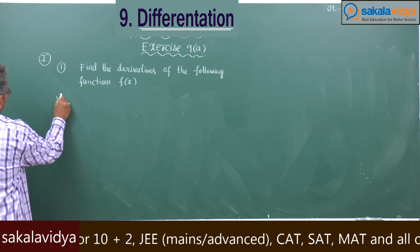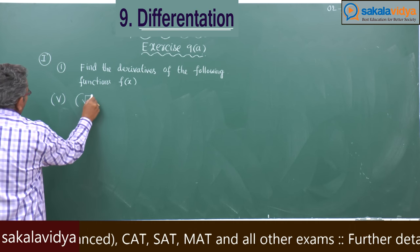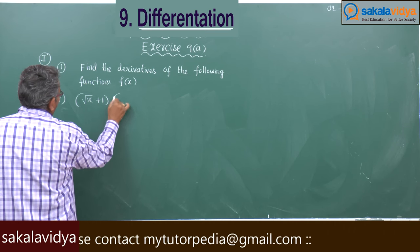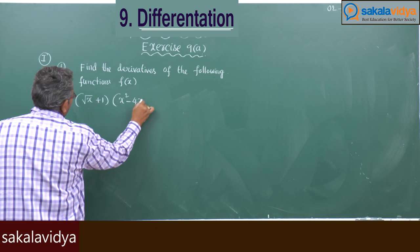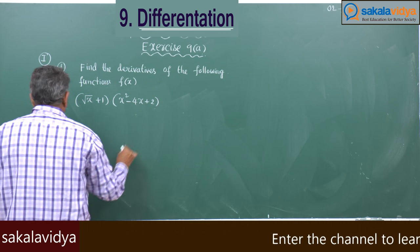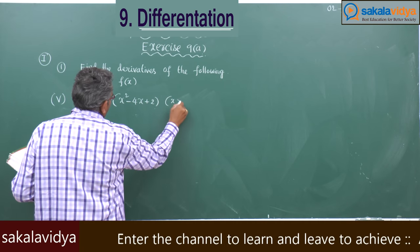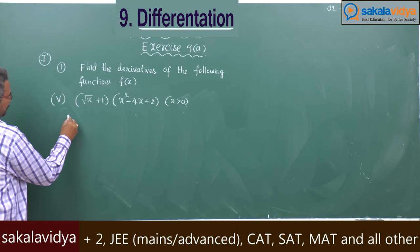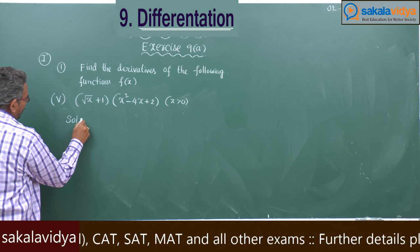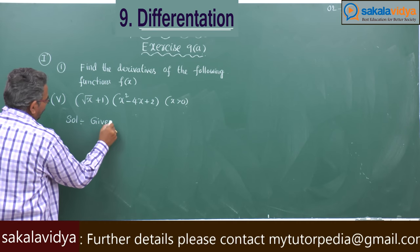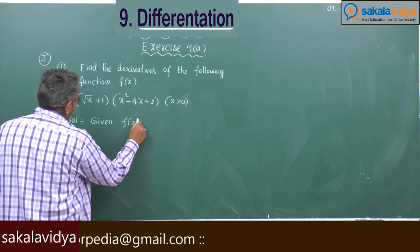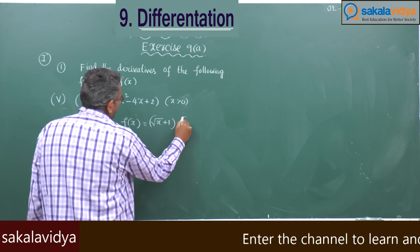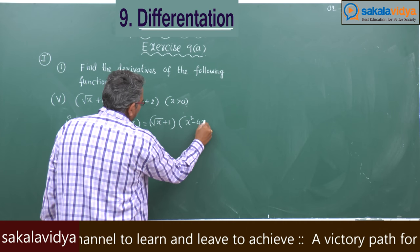Fifth problem. Given f(x) = √(x+1) · (x² - 4x + 2), where x > 0, x is positive.